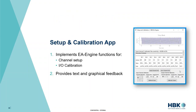The first app is the Setup and Calibration app, which implements a channel setup table along with input and output calibration functions. This allows you to activate and deactivate channels, manually update their sensitivity, and run input and output calibration so that channel sensitivity is automatically updated. It also implements graphical and text feedback so the user can follow what's going on with the EA Engine behind the scenes.